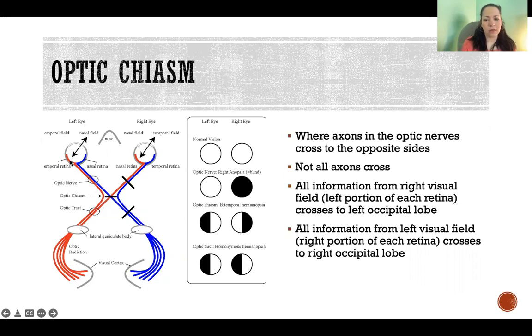So the information that's coming from the right visual field and being collected by the left portion of the retina travels to the left occipital lobe from both eyeballs. I like this picture a lot because it's color coded. It helps us really clearly see what's happening. So the left portion of each retina, that information goes to the left occipital lobe.